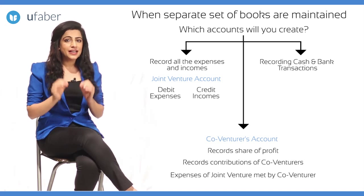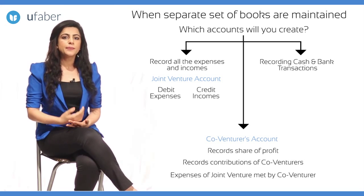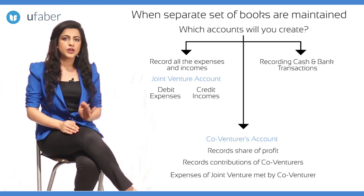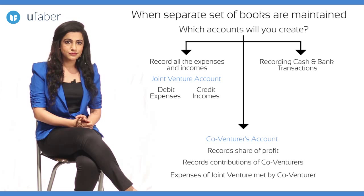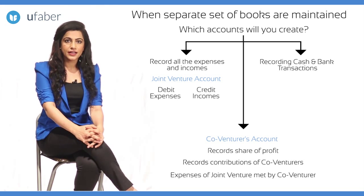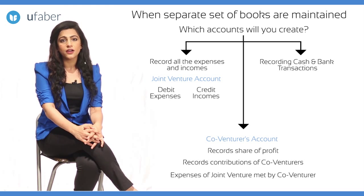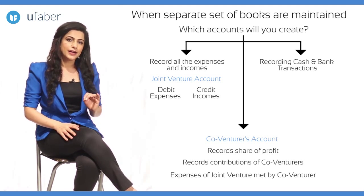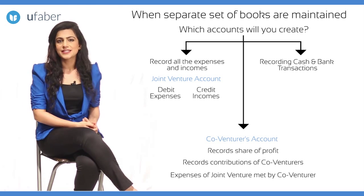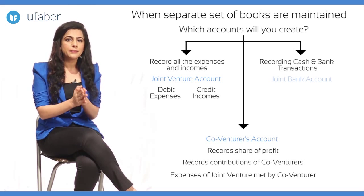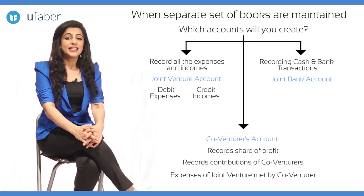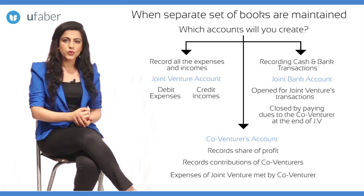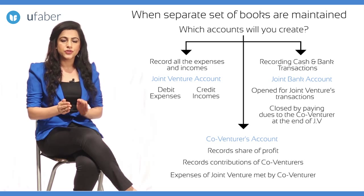Now, where do we record the second effect for the money or cash brought in by X or Y? Money that comes in is either held as cash or deposited to a bank account. In whose bank account do we deposit the money if all co-venturers contribute for the purpose of joint venture? In our example, we have co-venturers X and Y. If we deposit in the bank account of X, will Y contribute his part? Or if we deposit in the bank account of Y, will X contribute his part? Hence, in order to avoid any such disputes, we open the joint bank account of XYJV. This is a separate bank account opened for the purpose of joint venture transactions. At the end of the venture, this account is closed by paying off the dues to the co-venturer.